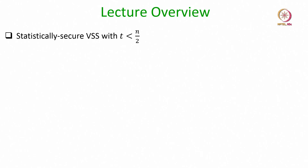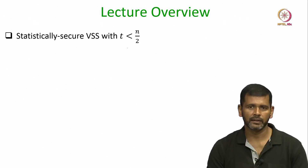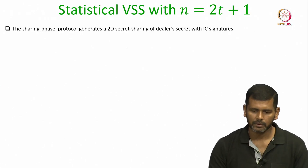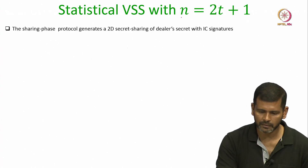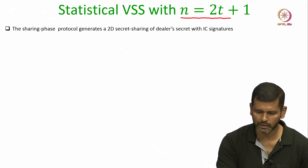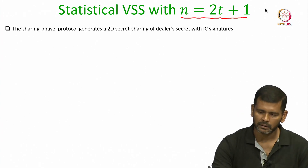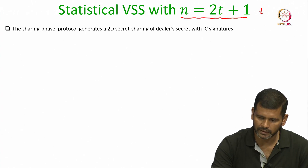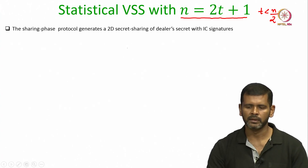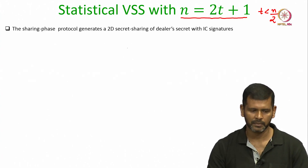Welcome to this lecture. In this lecture we will see a statistically secure verifiable secret sharing scheme with the condition t less than n over 2. For simplicity we will assume that the number of parties is exactly 2t plus 1, which is the smallest value of n satisfying t less than n over 2, and this is the optimal resilience bound for statistically secure multiparty computation.